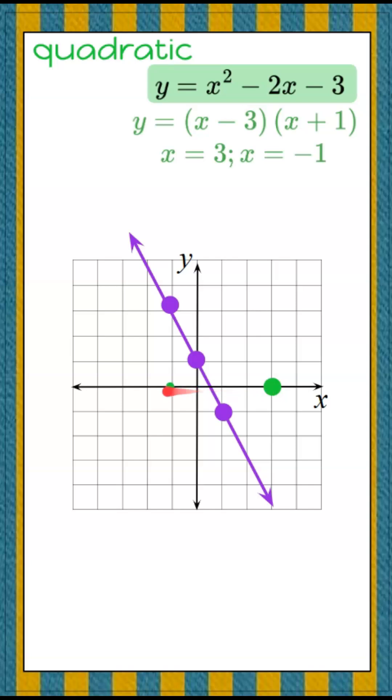We're going to plot the point 3 and the x-intercept negative 1, and now I'm ready to identify that the axis of symmetry is halfway between, which is the line x equals 1.